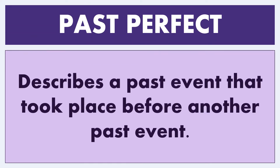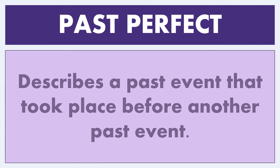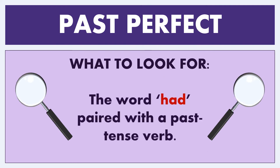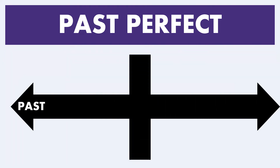Let's begin with the past perfect. This describes a past event that took place before another past event. What to look for: the word 'had' paired with a past tense verb. Let's see how this is illustrated on a timeline — we have the past, present, and future.